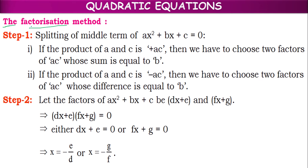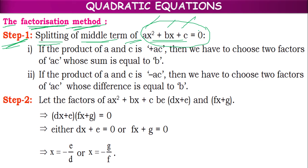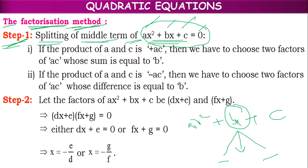The first method to learn is the factorization method. In factorization method, in step 1, splitting of the middle term of AX² + BX + C = 0 is the first step. In AX² + BX + C = 0, on the left hand side, we have AX² as the first term, BX as the second term, and C as the third term. The middle term is the second term. This middle term is to be split into two terms.